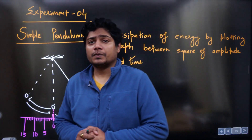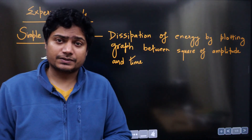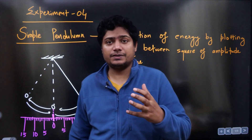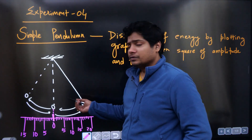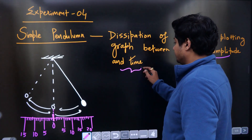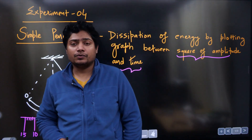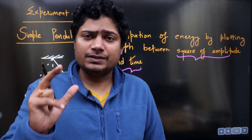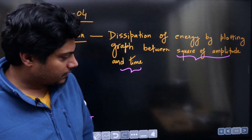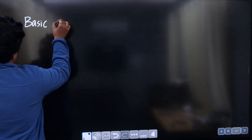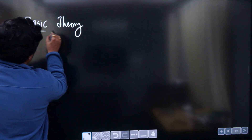Let us now discuss experiment number three. According to the syllabus, we need to understand the dissipation of energy of an oscillation — specifically for a simple pendulum. This is the graph between the square of amplitude and time. I am assuming you already know the basic meanings of amplitude and time period. The thing you need to learn here is damped oscillation. We will first talk about the basic theory and then go to the procedure.